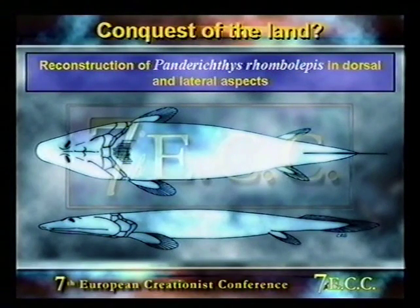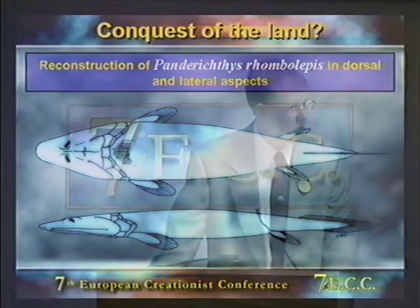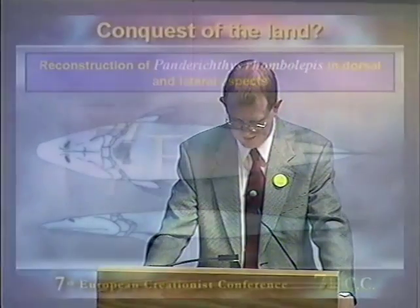Today opinion has shifted again — away from Eusthenopteron and the osteolepiforms to a formerly obscure group called panderichthyids. The panderichthyids were originally included among the osteolepiforms but are now classified as a separate group. New material from Latvia and Canada is said to show that these panderichthyid fish are very much more tetrapod-like than the other osteolepiform fish, and increasingly opinion is shifting in favor of the panderichthyids as the closest relatives of tetrapods.